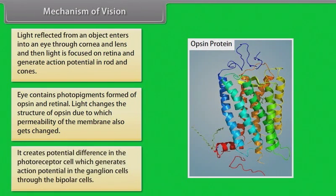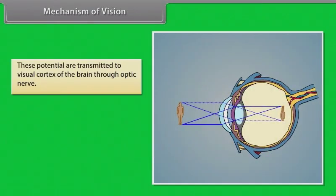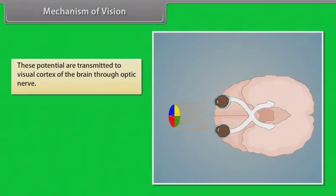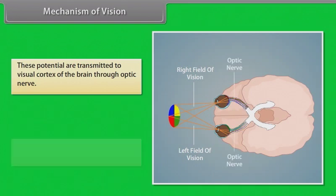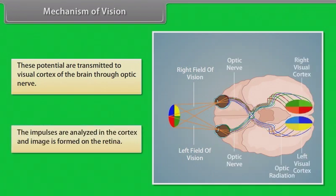This creates a potential difference in the photoreceptor cell, which generates action potentials in the ganglion cells through the bipolar cells. These potentials are transmitted to the visual cortex of the brain through the optic nerve. The impulses are analyzed in the cortex and an image is formed on the retina.